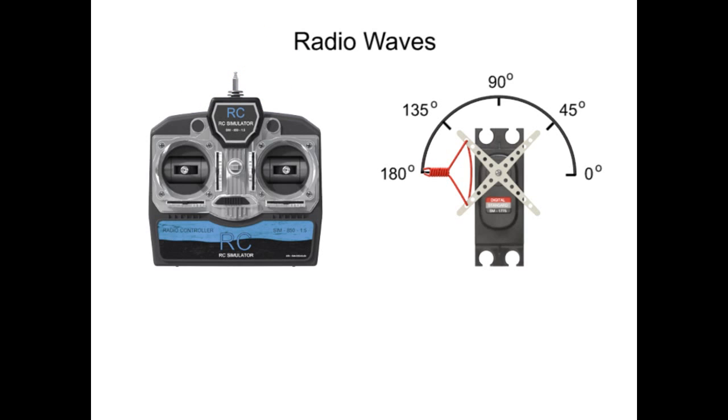The servo expects to receive a converted digital pulse roughly every 20 milliseconds. This train of pulses instructs the servo motor to hold its position. It is the pulse duration repeating at regular intervals that tells the servo where to turn.